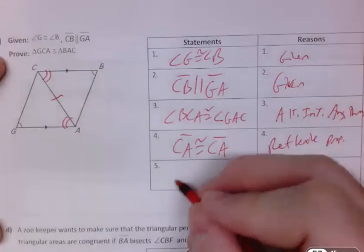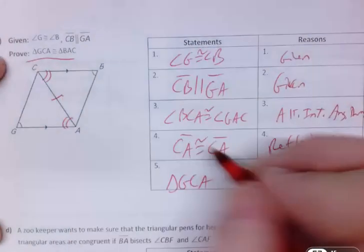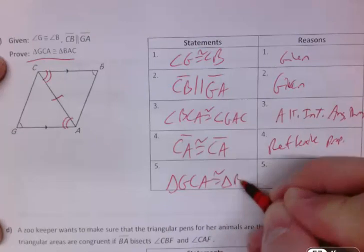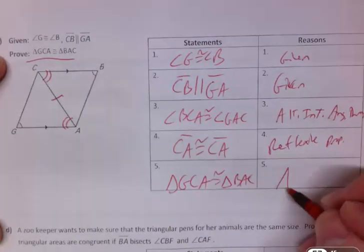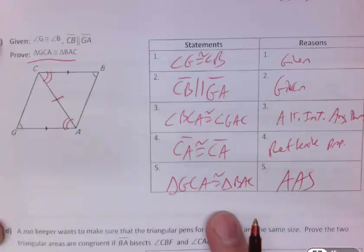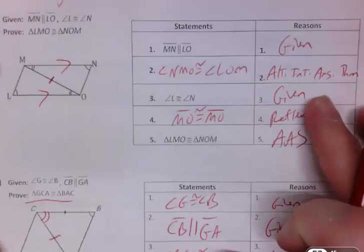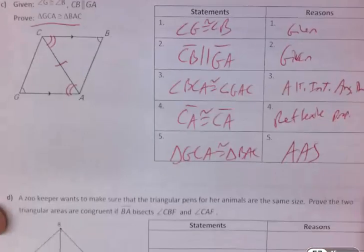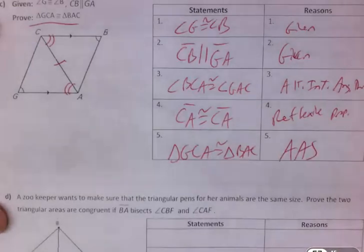And we also have the reflexive property. So we have CA congruent to CA by the reflexive property. And then, of course, the two triangles, GCA is congruent to triangle BAC. And again, it's by angle-angle-side. So the difference between these two is you had to come up with all the statements yourself. But by seeing this one, hopefully that helped. And then all the reasons are basically the same in this particular case.